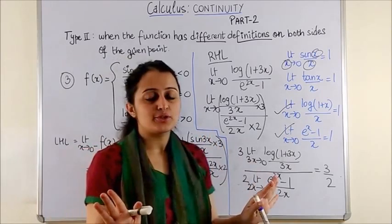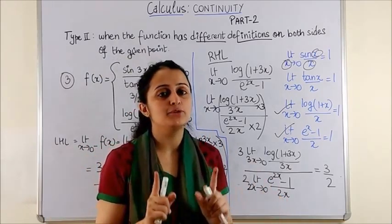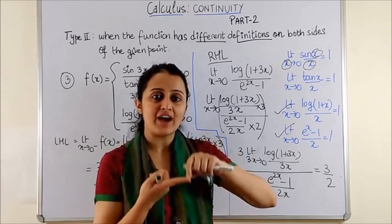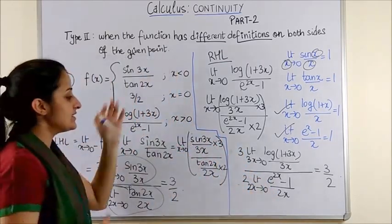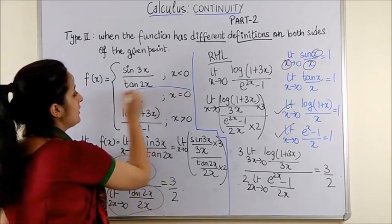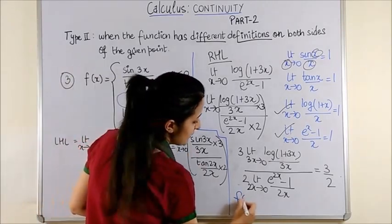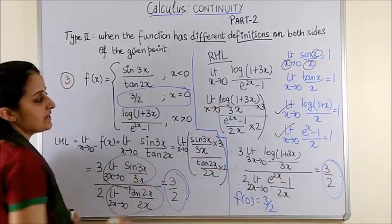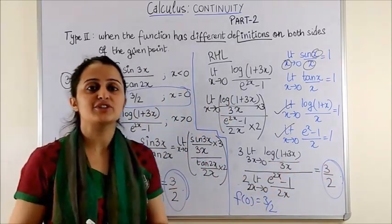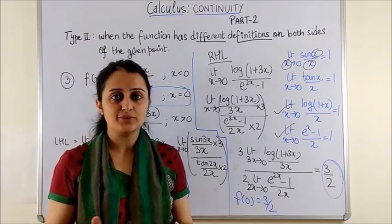But I know you'll get super happy after doing this. But do not forget to check for the value of the function at that point, which is once again 3 by 2 from here. So, f of 0 is further 3 by 2. So, all 3 happen to be the same. And yes, the function is continuous at x equal to 0.